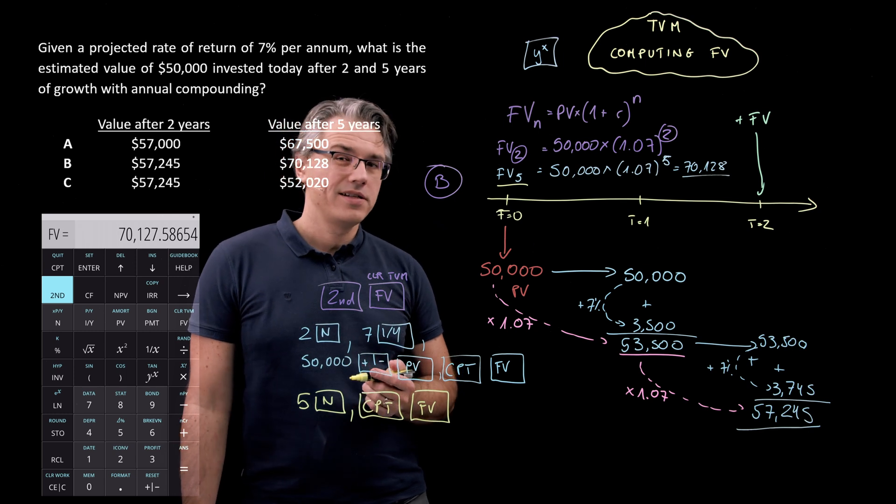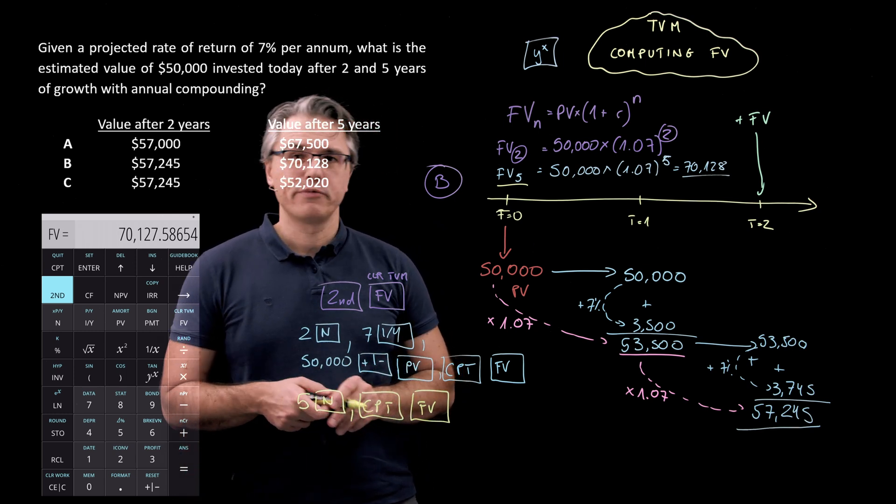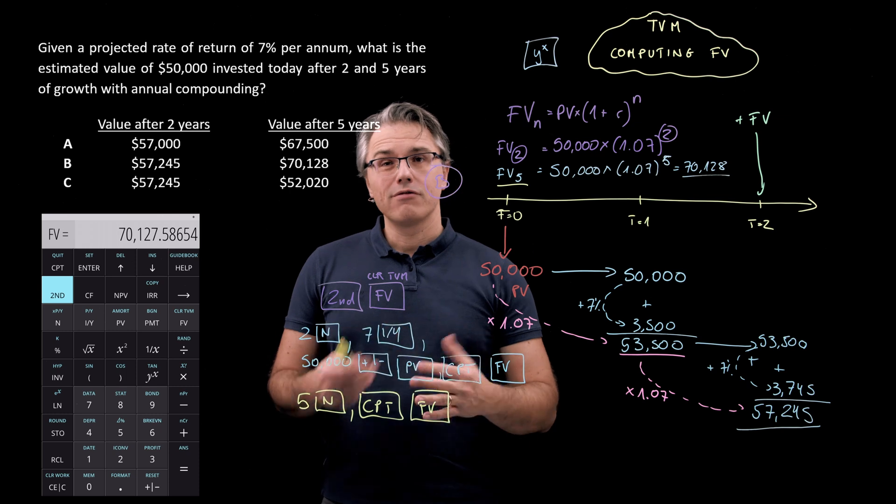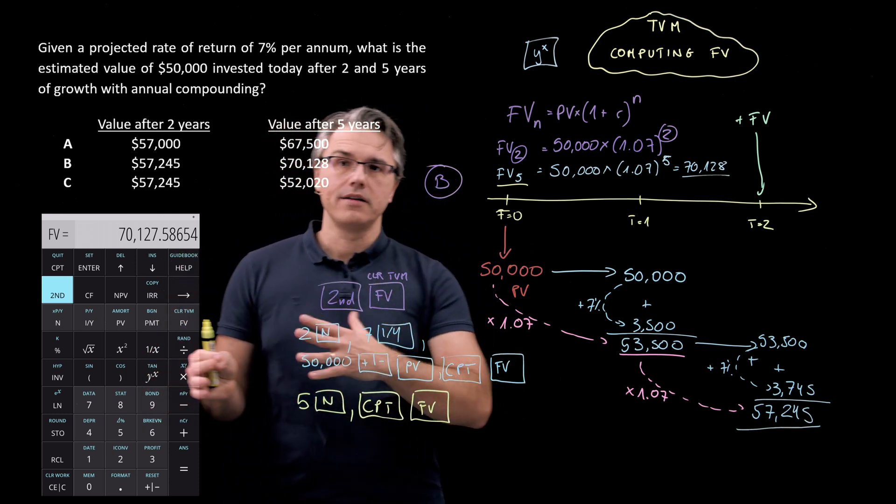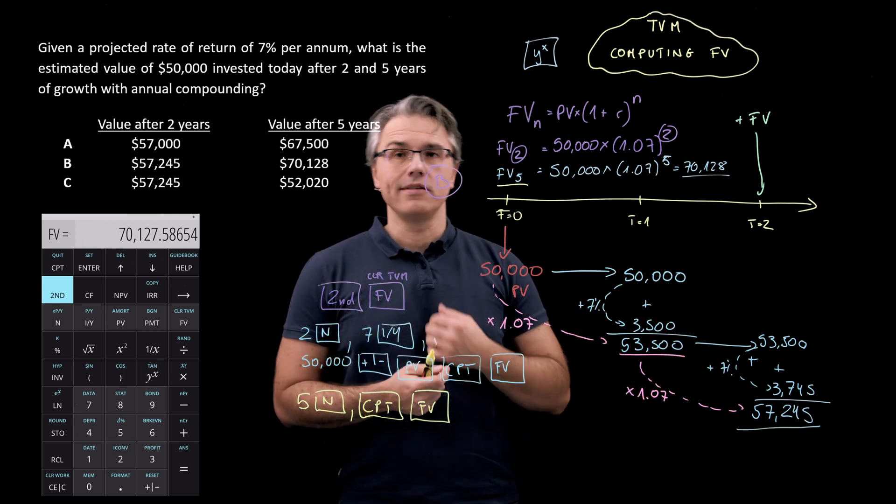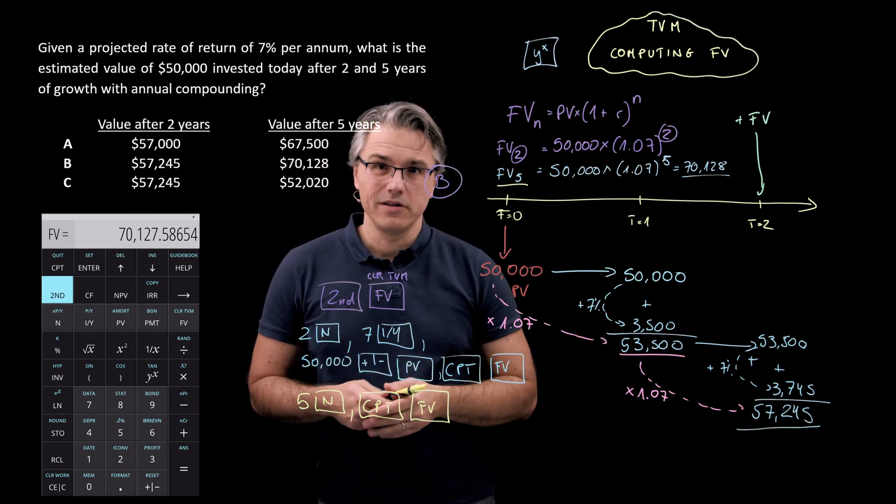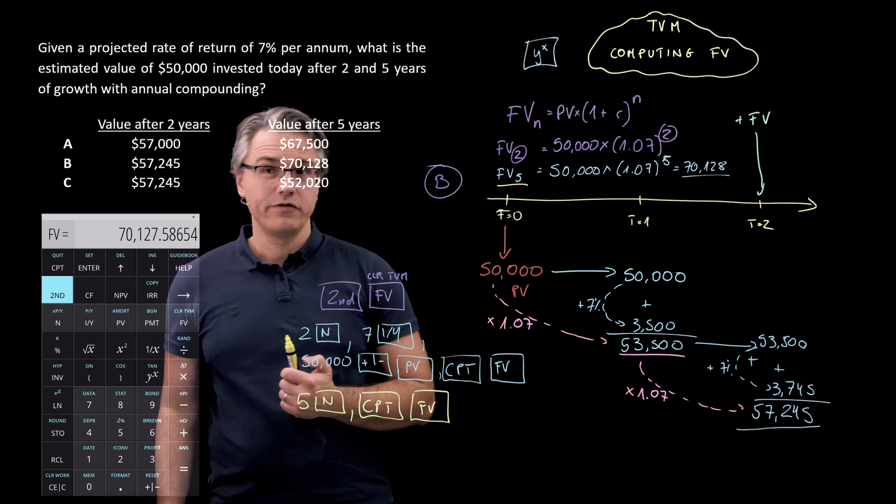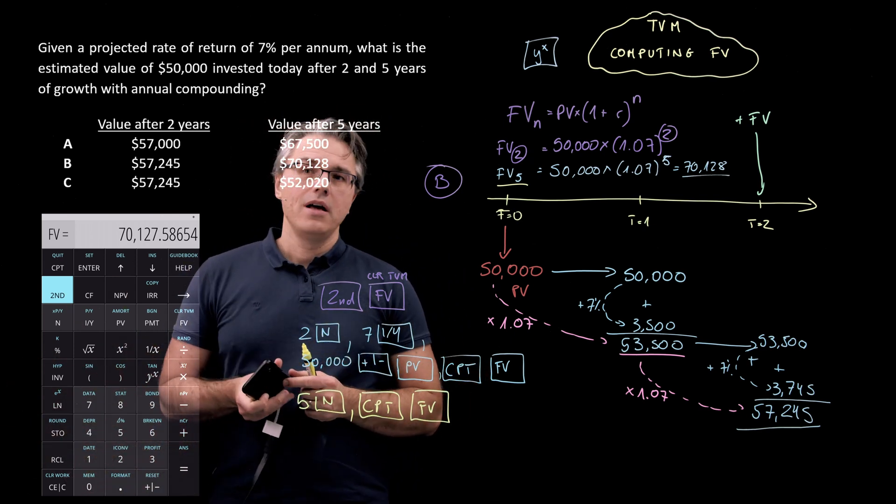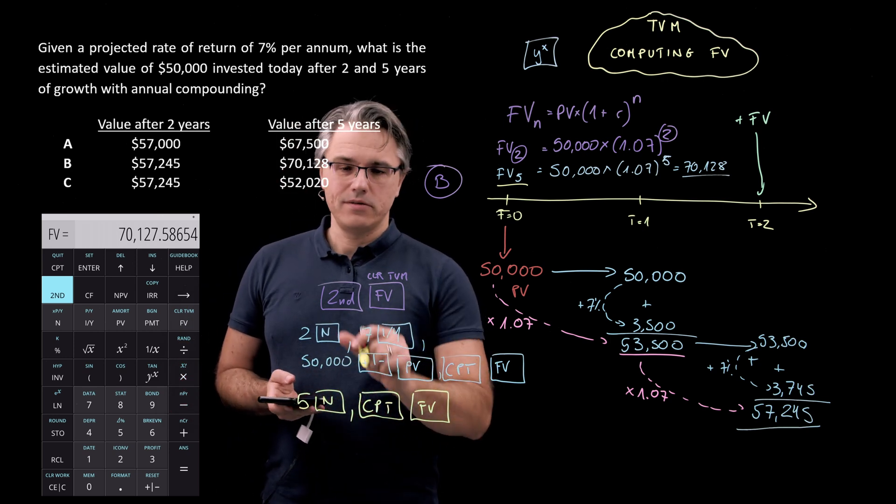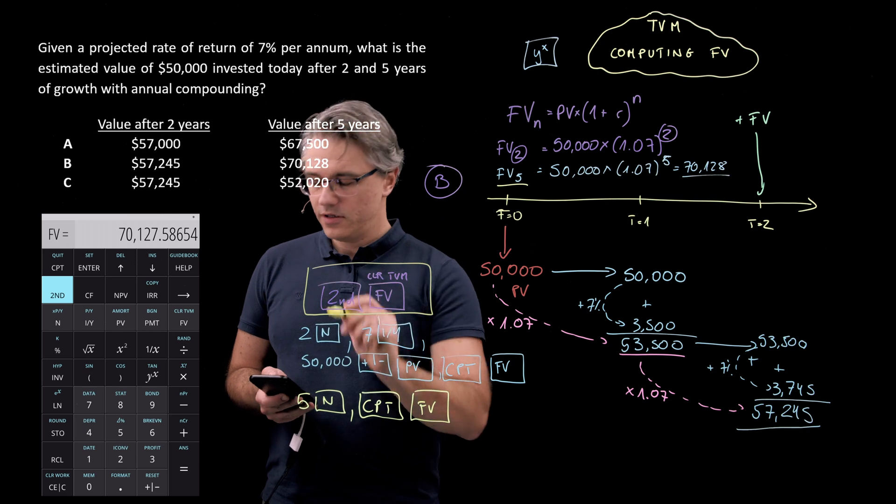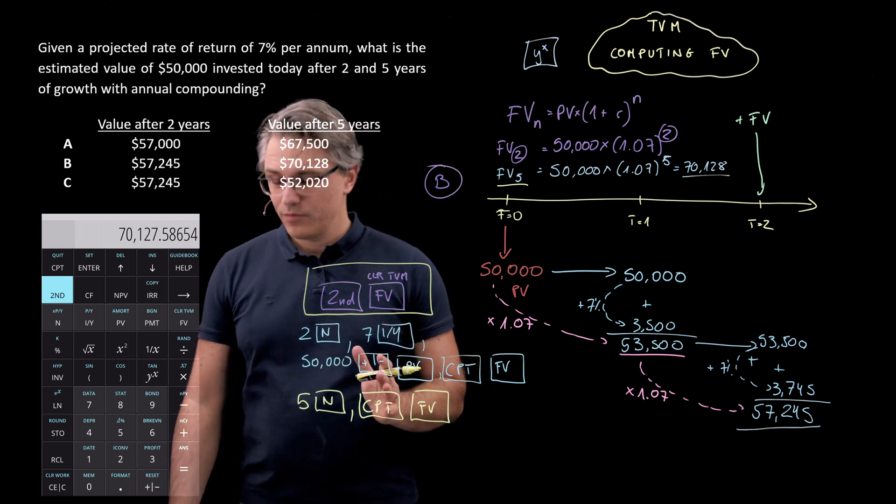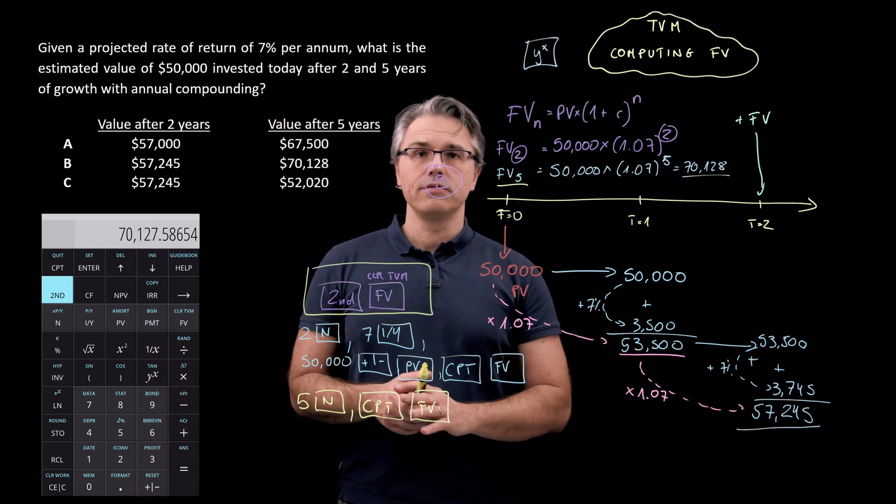So in the exam, whenever you have one of these relatively simple time value of money problems, what I would probably do is use this method. It's quick. Although sometimes if you know you're going to make several changes because you need to calculate the value at a certain point in time and then at another and just change a single input, maybe it's better to follow this procedure because your calculator will store the relevant inputs. But before you get or before you go to any fresh problem in time value of money, it's always good just to make sure that you clear the time value of money worksheet. So do second followed by clear TVM, and that will remove from your calculator's memory anything relating to problems you've already solved.